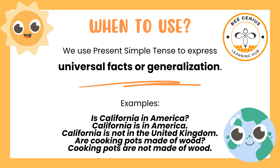Here are some examples of using present simple tense to express universal facts or generalizations: Is California in America? California is in America. California is not in the United Kingdom. Are cooking pots made of wood? Cooking pots are not made of wood.